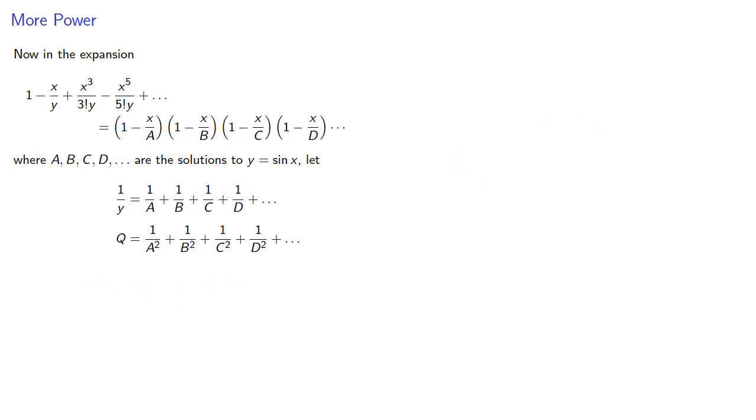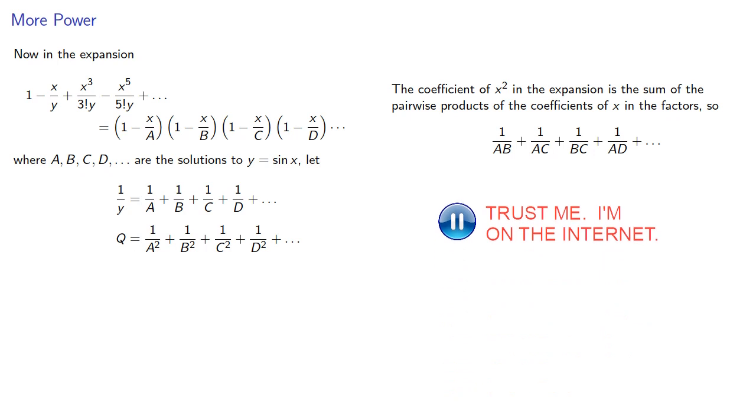But wait, there's more. The coefficient of x squared in the expansion is the sum of the pairwise products of the coefficients of x in the factors. We don't have an x squared term in the expansion, so our coefficient is 0.